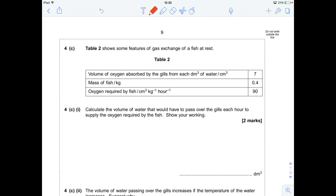What else have we got? This table shows some features of gas exchange of a fish at rest. We've got some information, and we're going to have to do some maths. Let's have a look. So we've got information about the volume of oxygen absorbed by the gills from each decimetre cubed of water. We've got the mass of a fish that we're looking at. We've got oxygen required by the fish per centimetre cubed per kilogram per hour. Right. Okay. So I think the first thing that we should do is work out how much oxygen is required per hour by the fish.